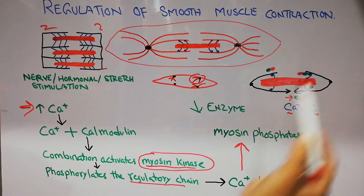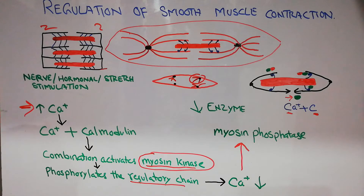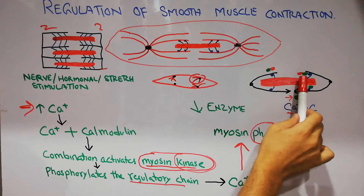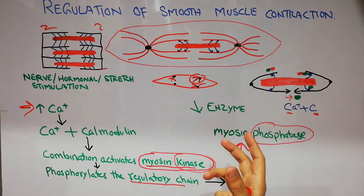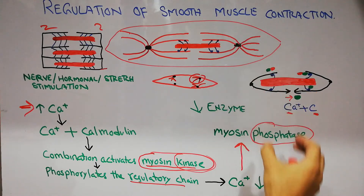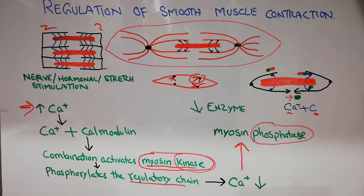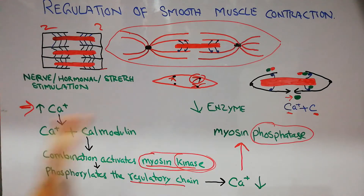Myosin phosphatase, shown here in red, comes and deactivates and removes the myosin kinase. Initially the regulatory light chain was not phosphorylated; then calcium and calmodulin combined and activated myosin kinase, which came and activated this light chain. Then when the calcium level decreased, myosin phosphatase came and removed or deactivated the myosin kinase, and the heavy chain returned to its original level and contraction stopped.